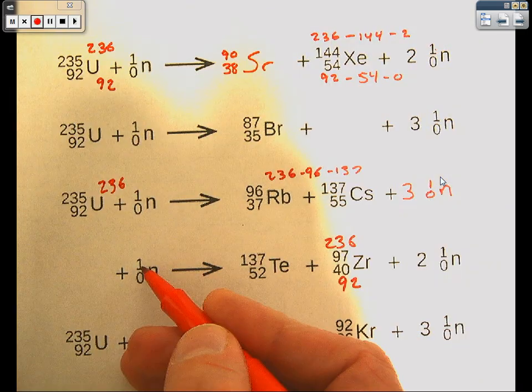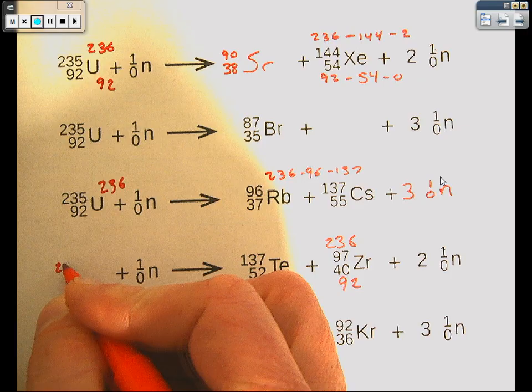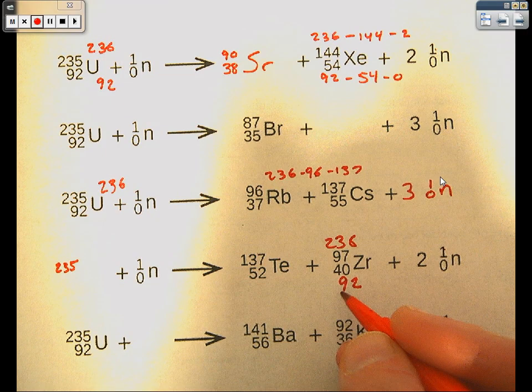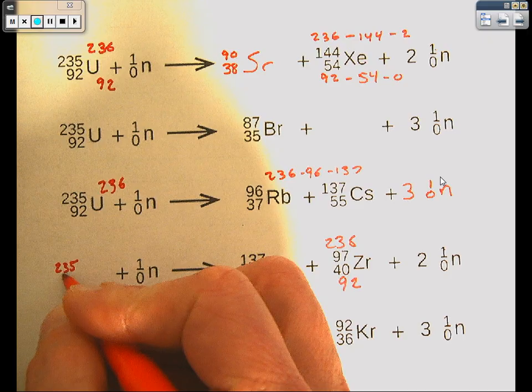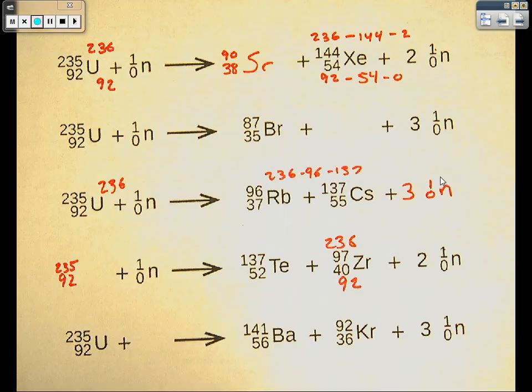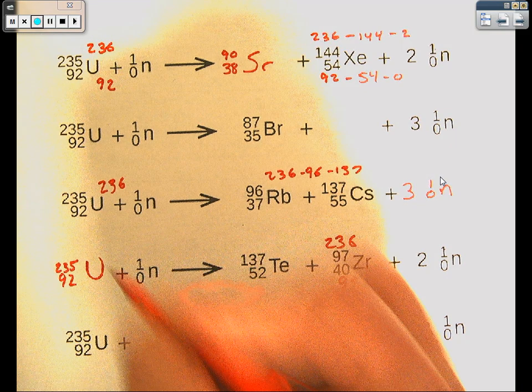And subtract out as we go the other way. So 236 minus 1. 235. 92 minus 0. 92. Look up 92 on the periodic table. That's uranium.